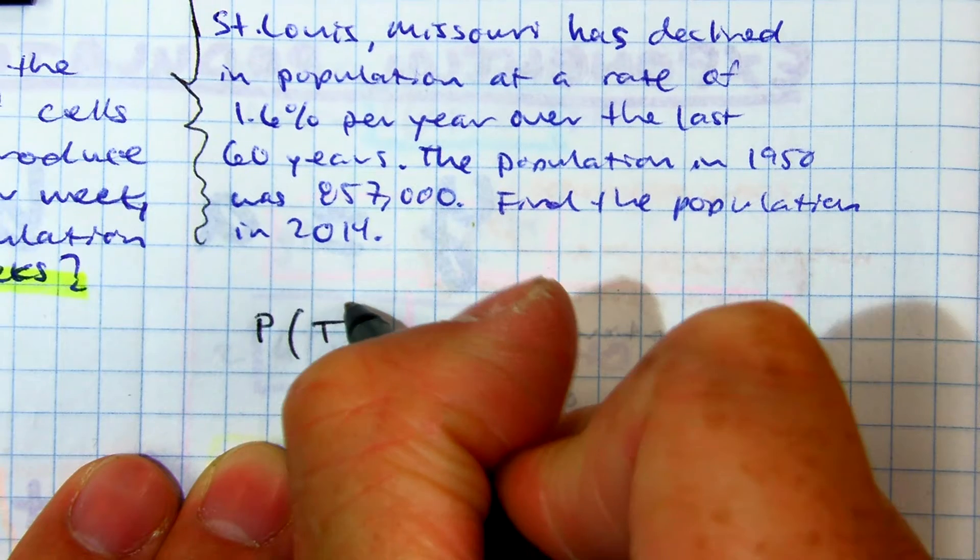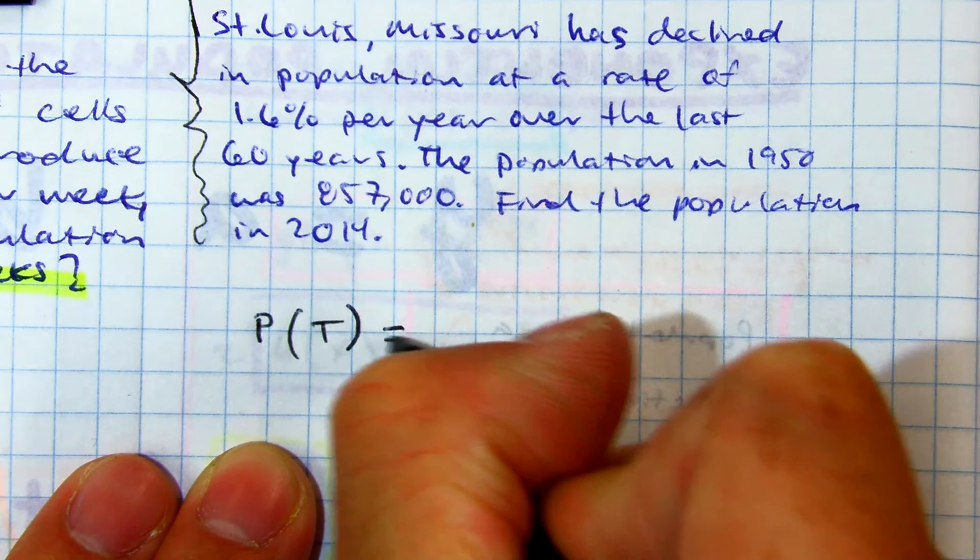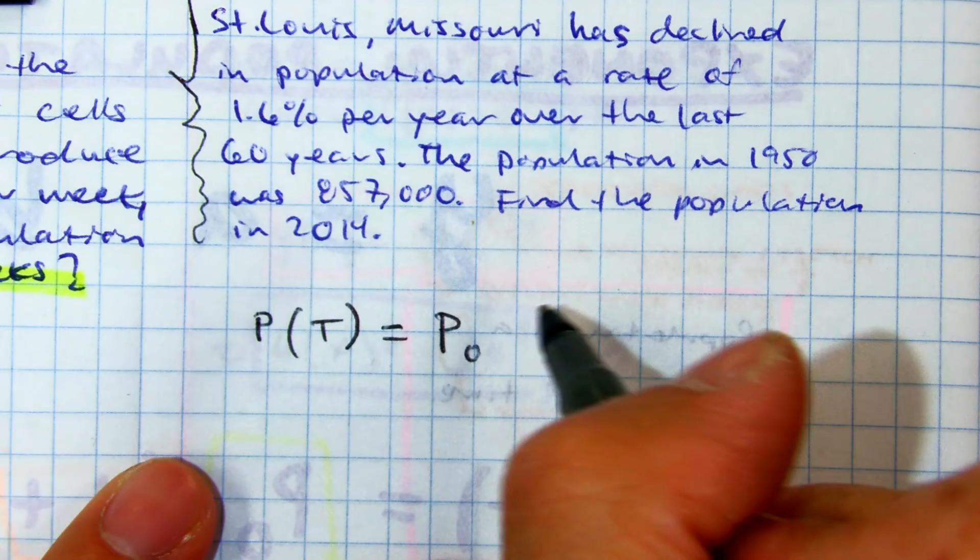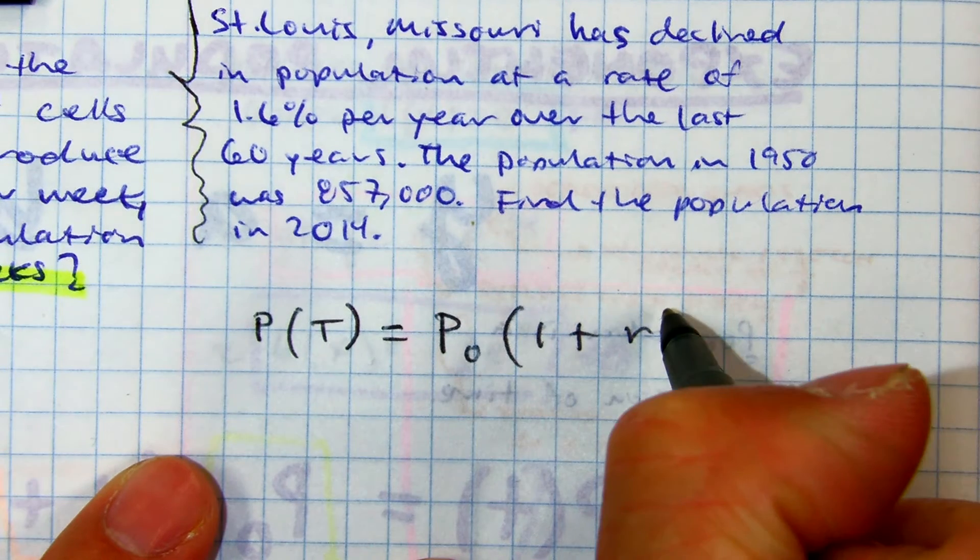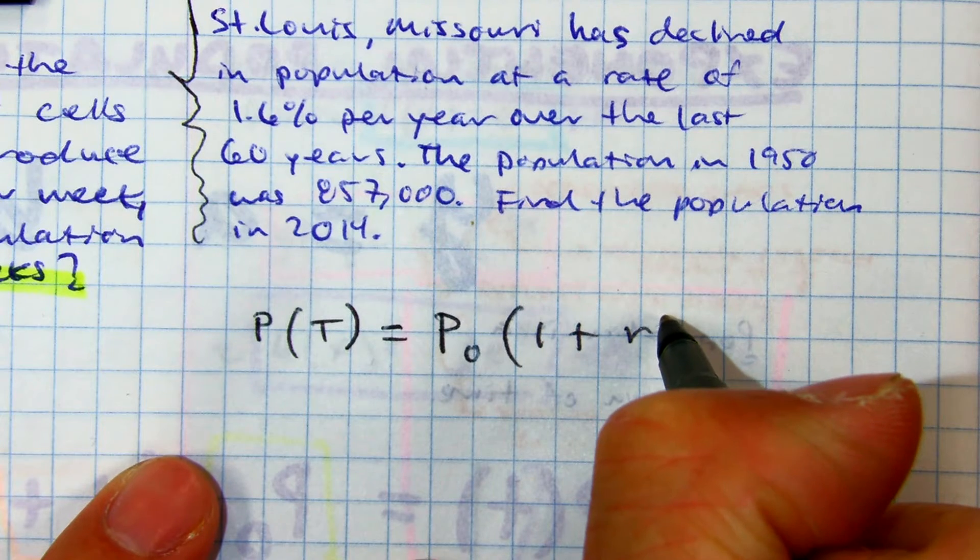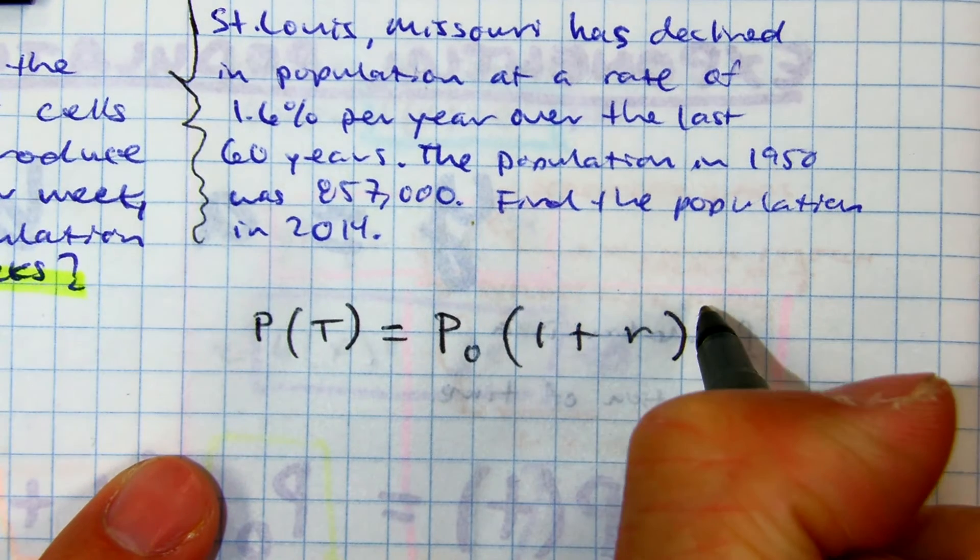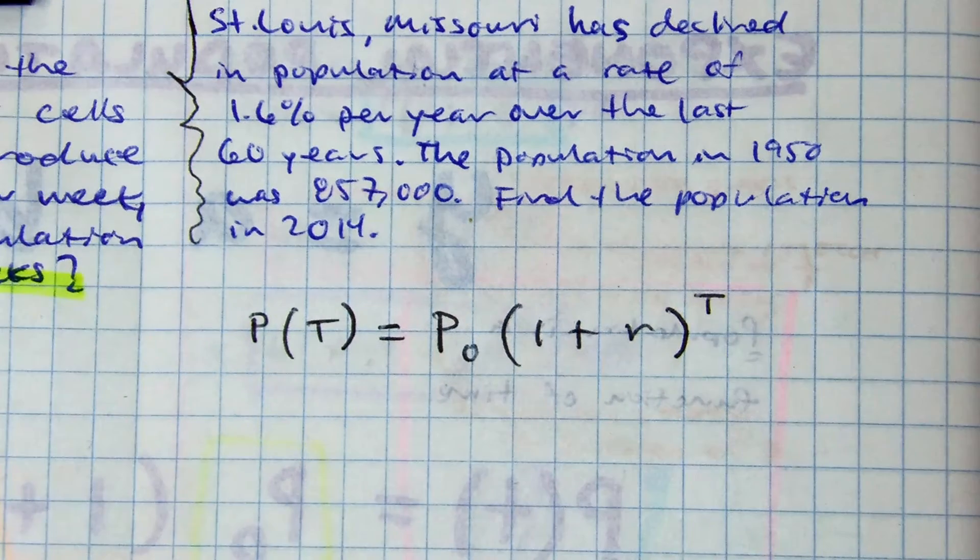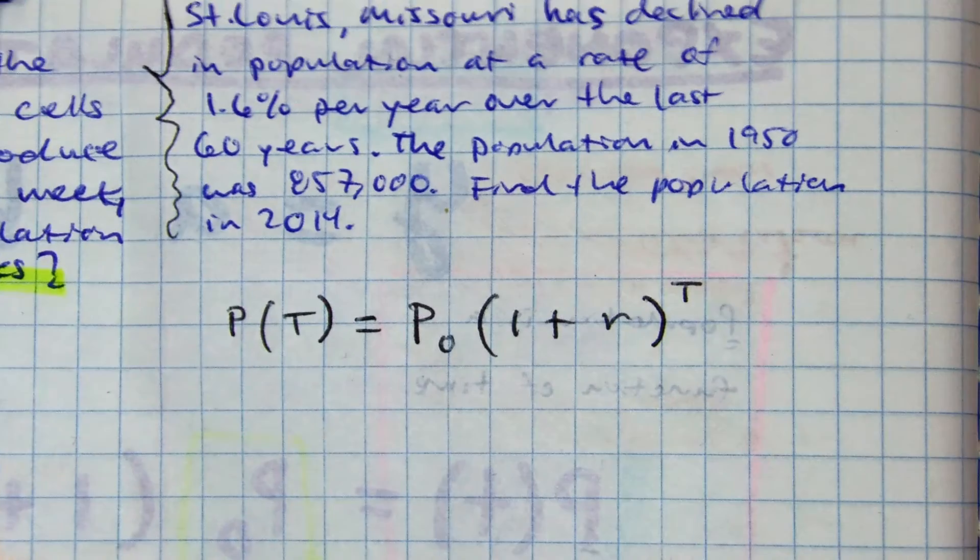P, P of T. Raise your hand if you have that on your paper. You're going to get partial credit, 2 out of 4 points, just for having that down.